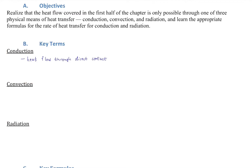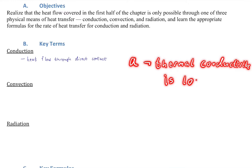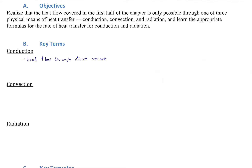Conduction is heat flow through direct contact — when two substances touch each other. This includes touching air, but air has a very low thermal conductivity, so heat doesn't flow through it very easily. Conduction is most important through a solid, such as two bodies of air separated by a wall.